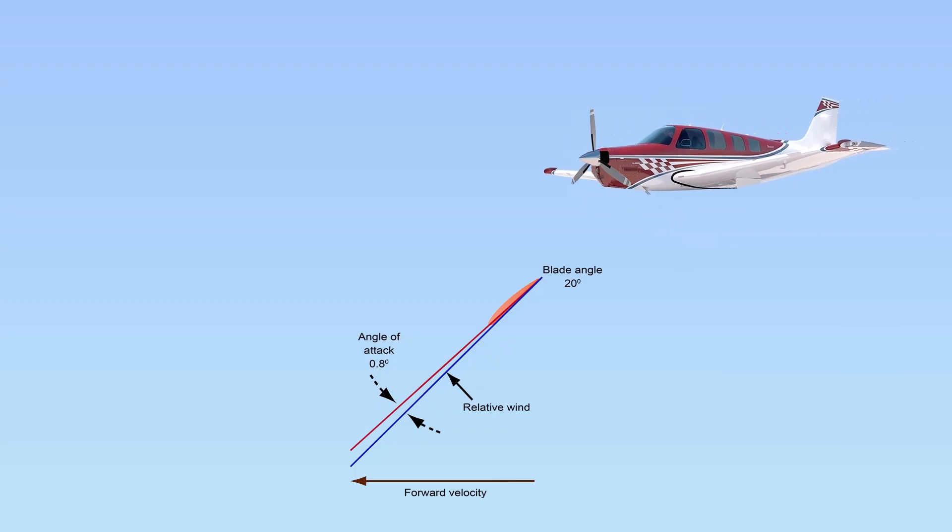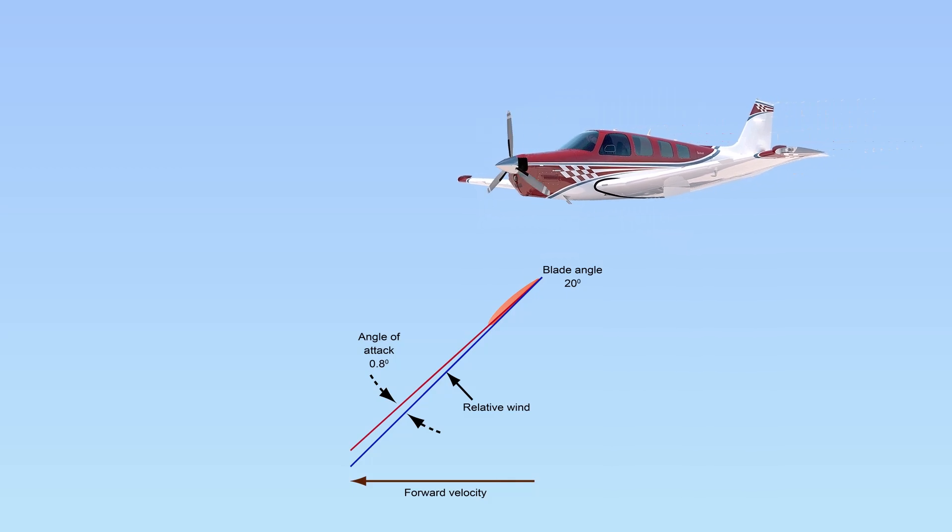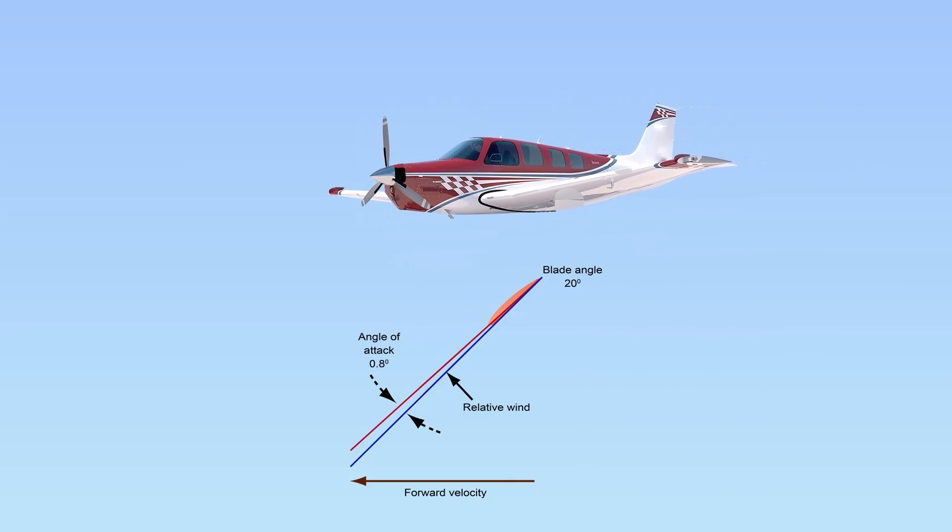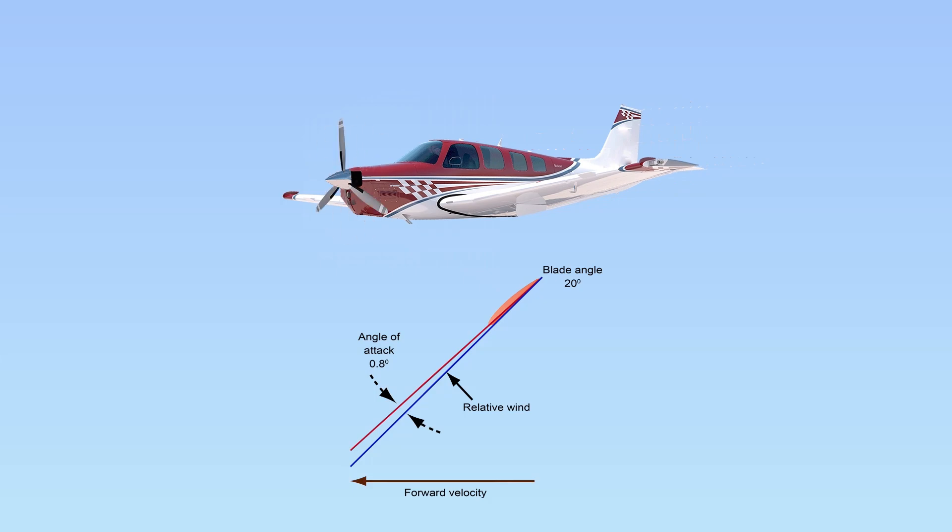Based on the effect that forward motion has on the relative wind of a propeller blade, the faster an aircraft moves through the air, the smaller the angle of attack on the propeller blade.